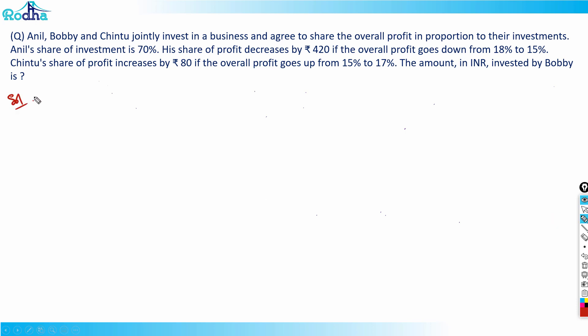Let's look at the next question from CAT 2021 Slot 2. Anil, Bobby, and Chintu jointly invest in a business and agree to share the overall profit in proportion to their investments. Anil's share of investment is 70%. His share of profit decreases by ₹420 if the overall profit goes down from 18% to 15%. Chintu's share of profit increases by ₹80 if the overall profit goes up from 15% to 17%. We need to find the amount invested by Bobby.